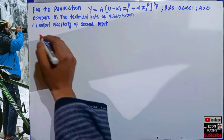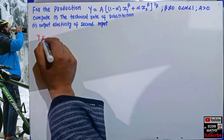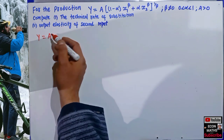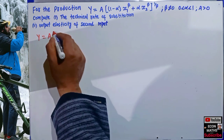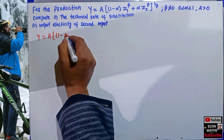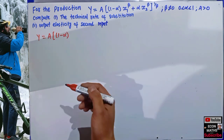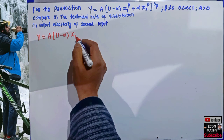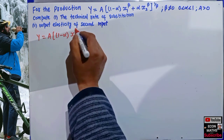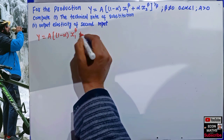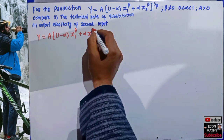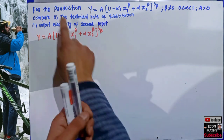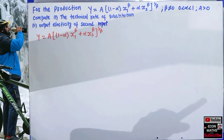We are given that y (output) is a function where 'a' is the efficiency parameter, also called the state of technology. Alpha is the distribution parameter. x1 is input 1 and x2 is input 2, both raised to the substitution parameter beta. The whole expression is raised to the power 1/beta. First, we need to calculate the technical rate of substitution, that is the marginal rate of technical substitution.